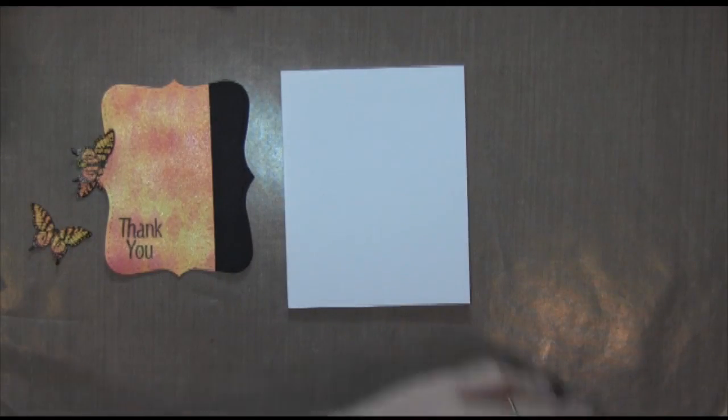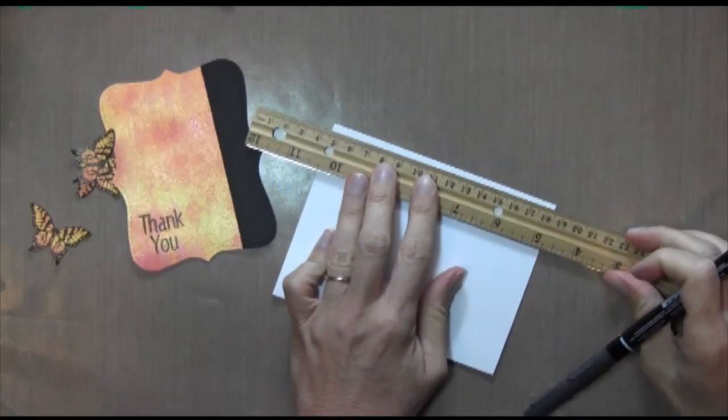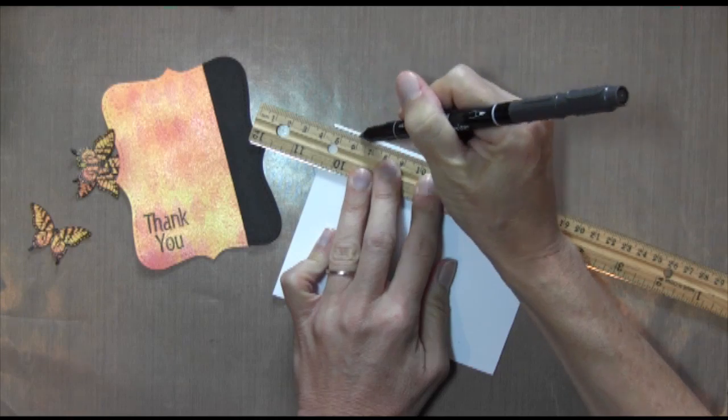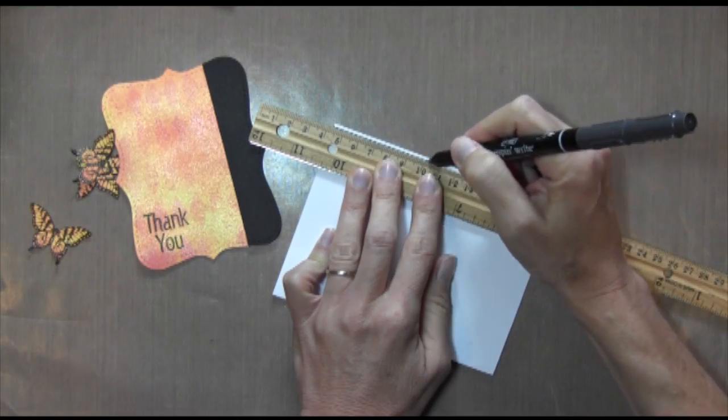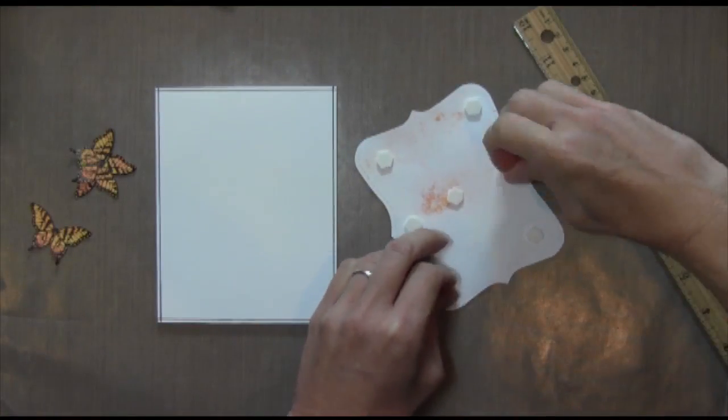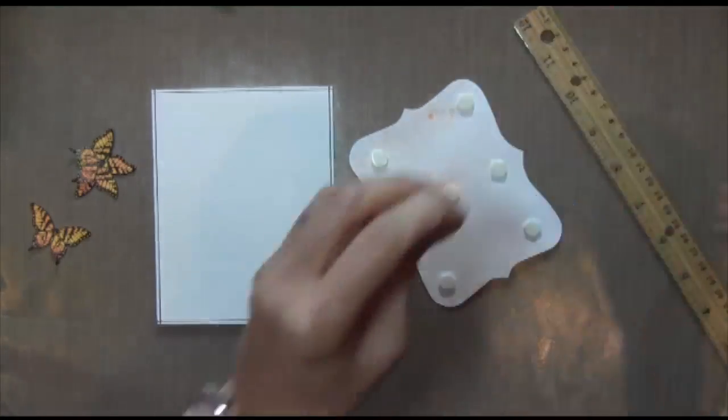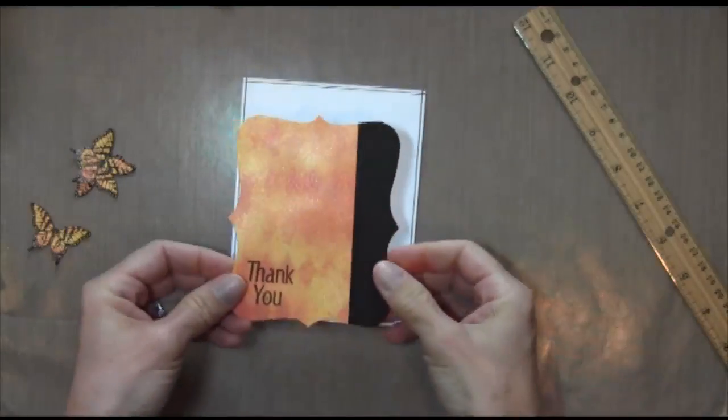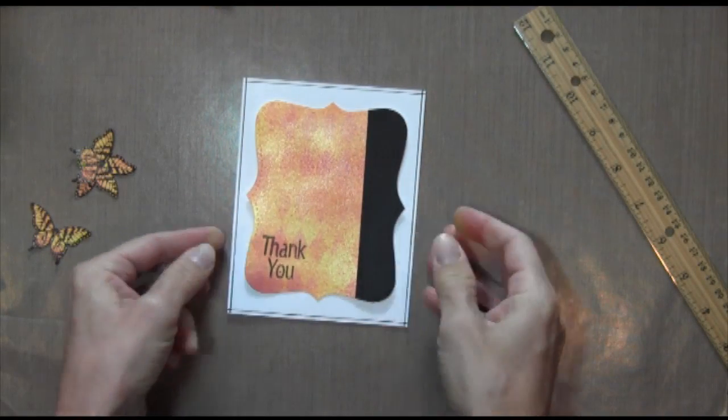And because this is kind of a clean card, not so whimsical, I used a ruler to draw my lines around each side, just with a Stampin' Up marker. When I was done with that, I just used some Stampin' Up Dimensionals, which is foam adhesive, and I put it right there in the middle.